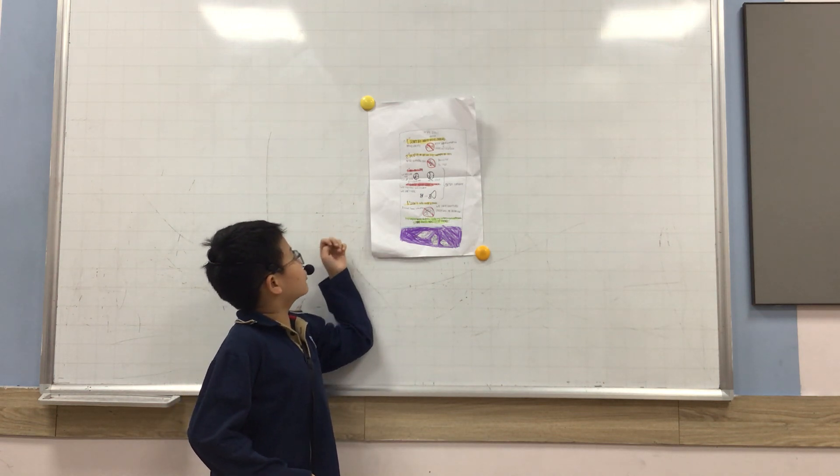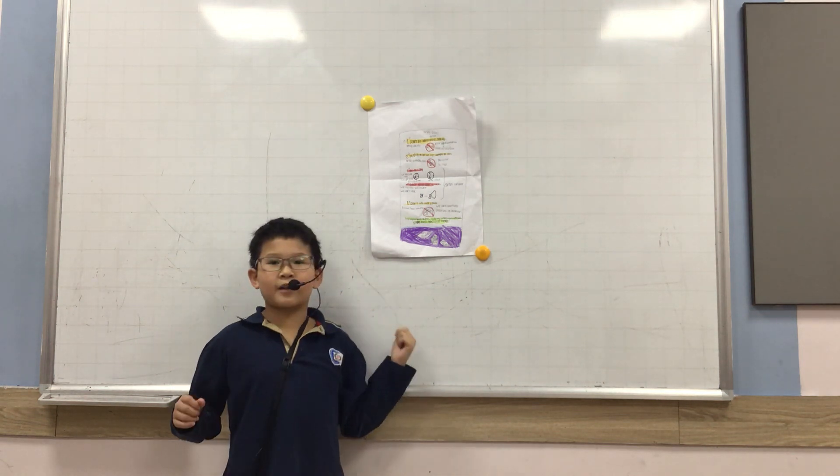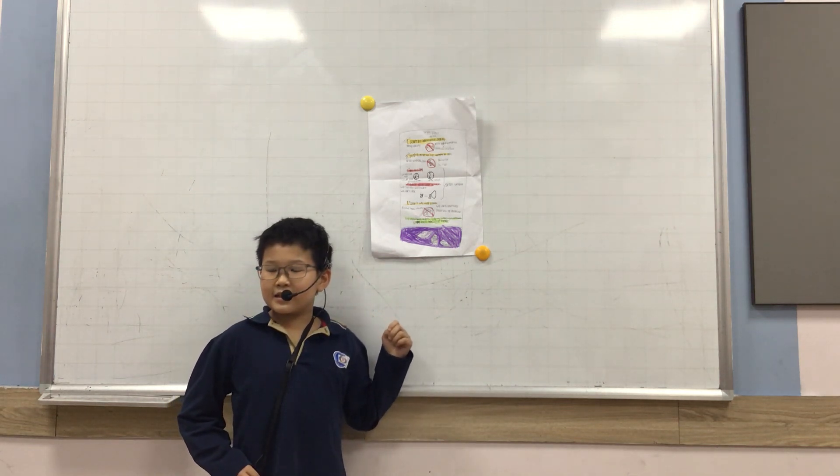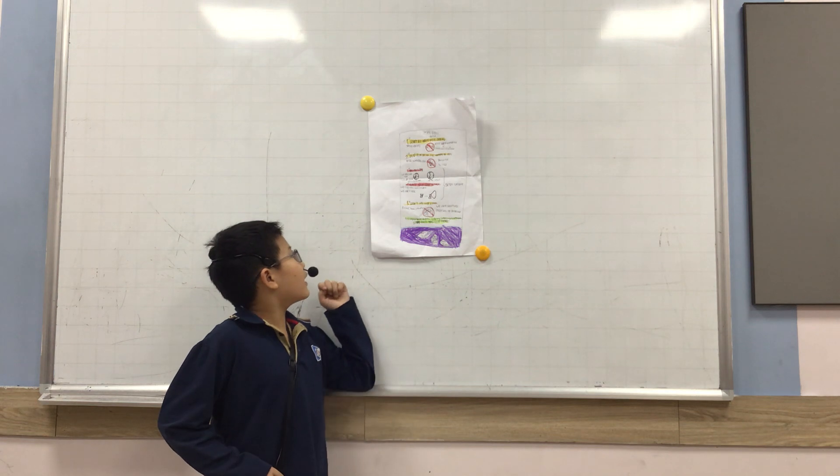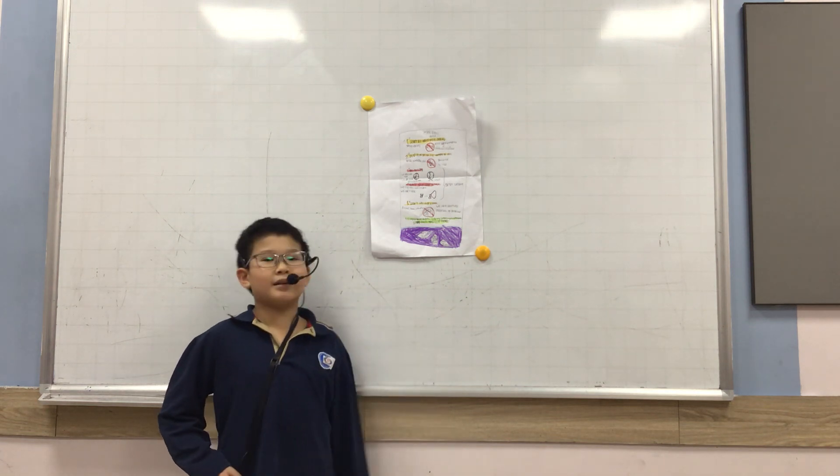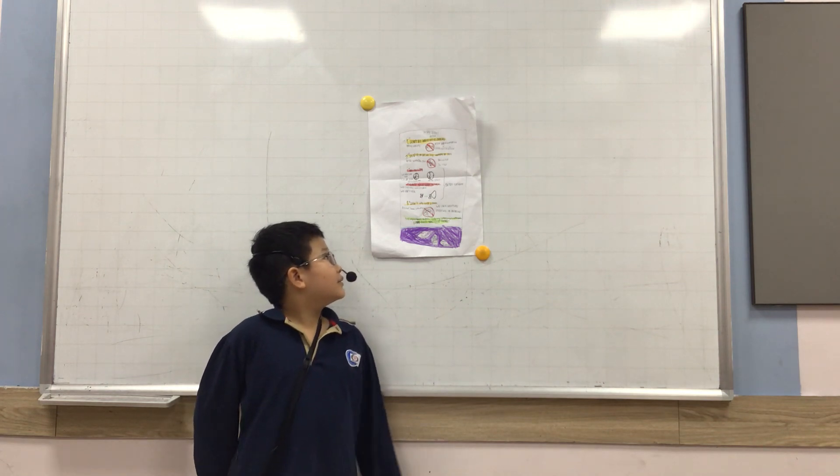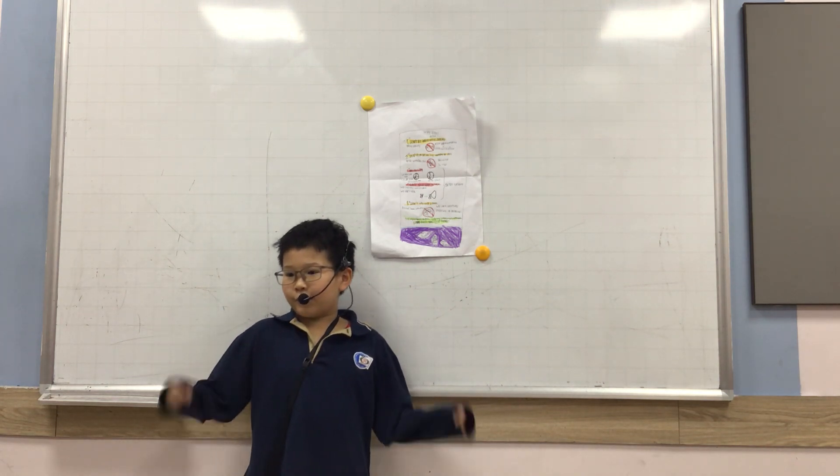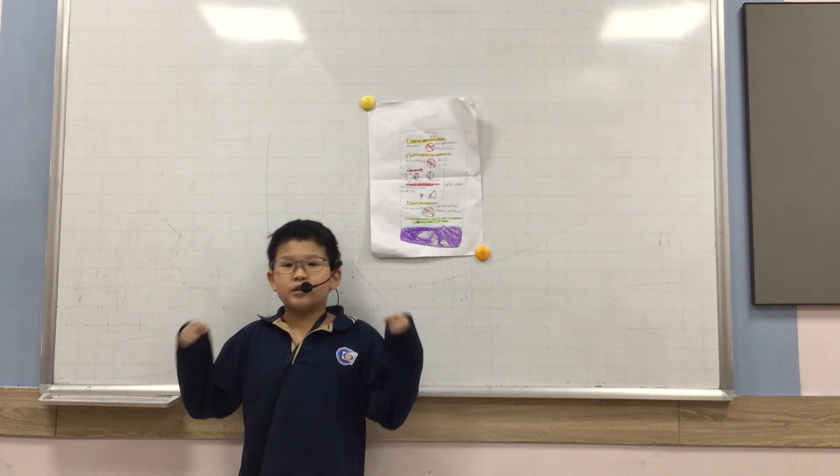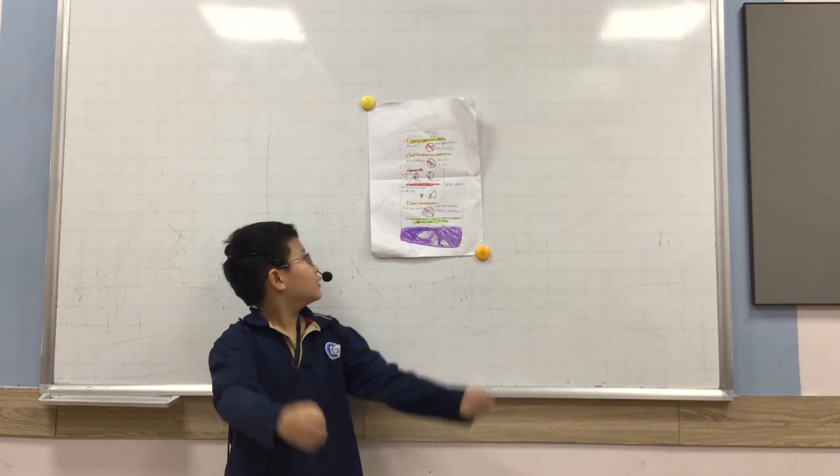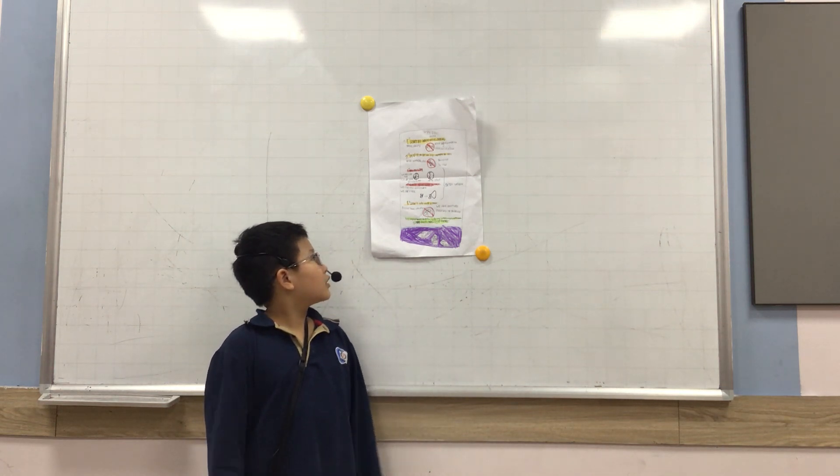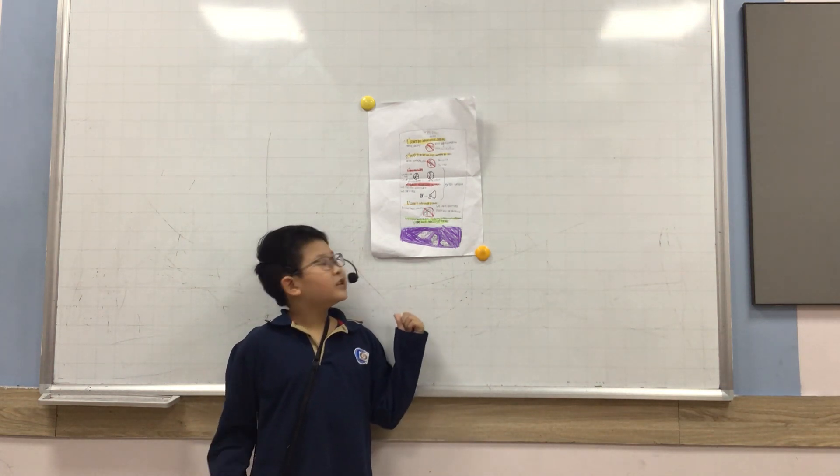My fifth room is don't say bad words. I usually see this room at school, at my home, and in the office. If we follow the room, we can be good people. If we don't follow the room, others will say you are bad.